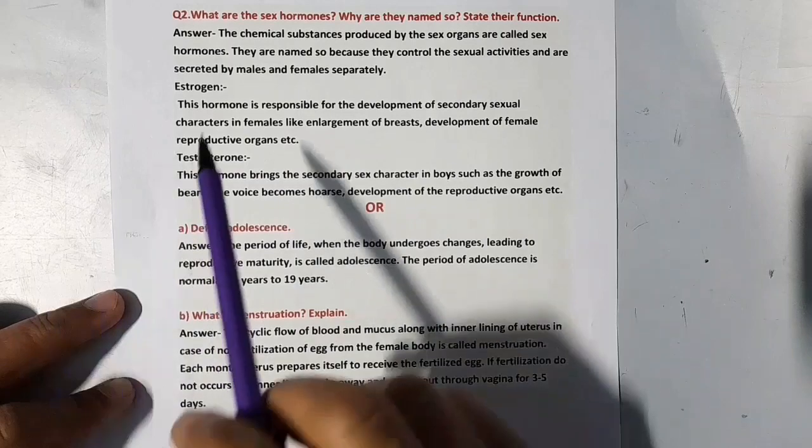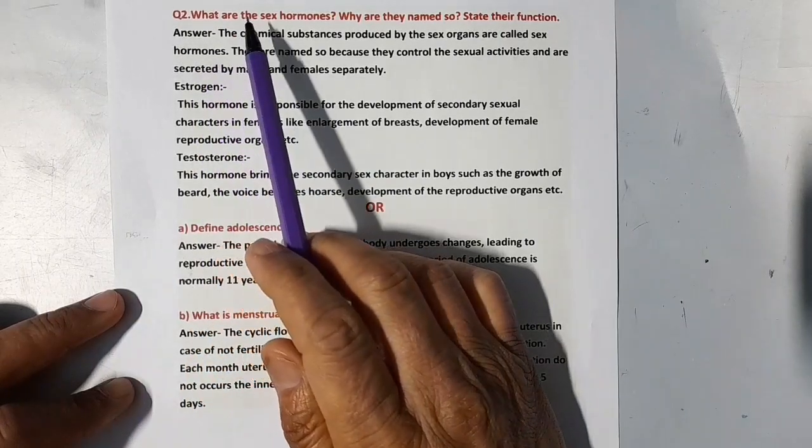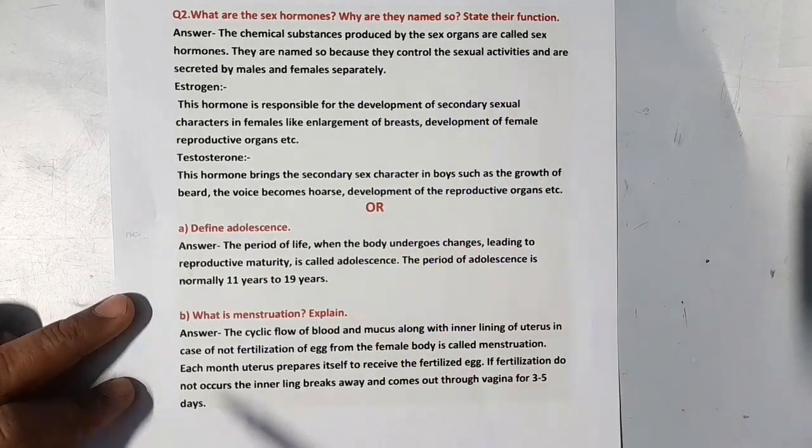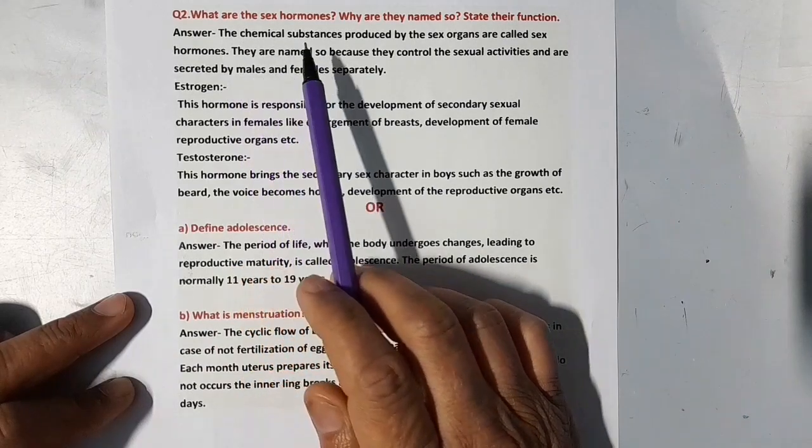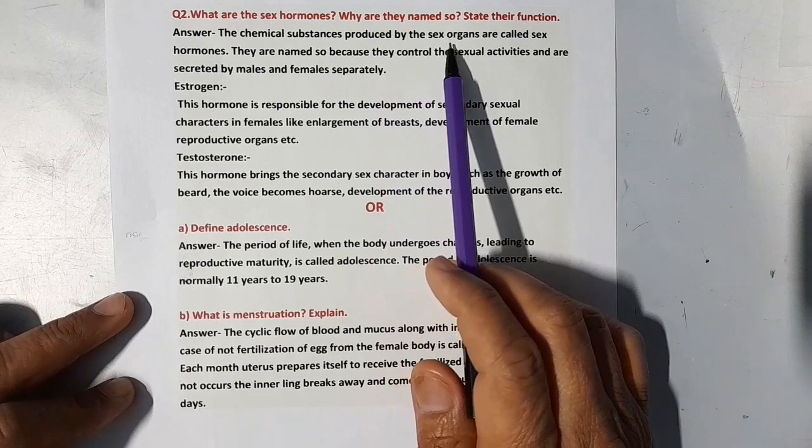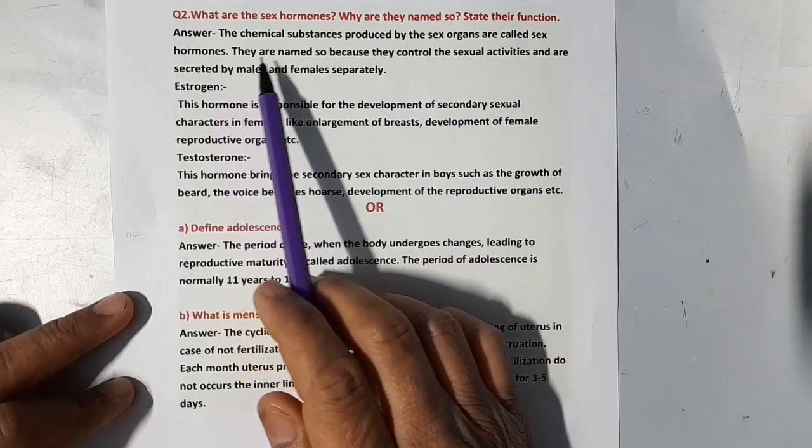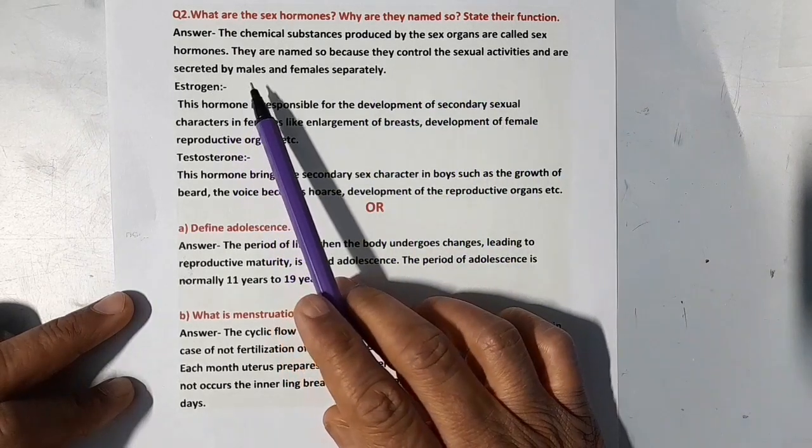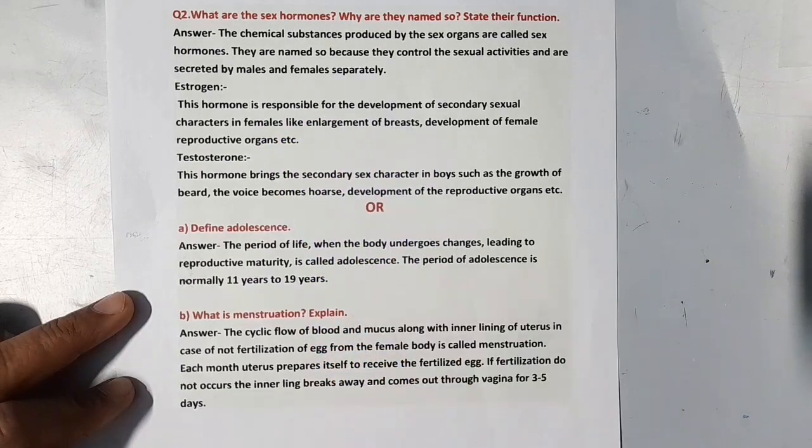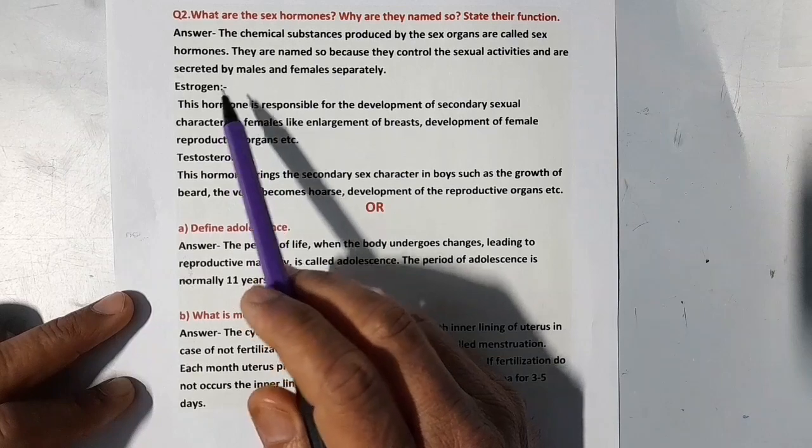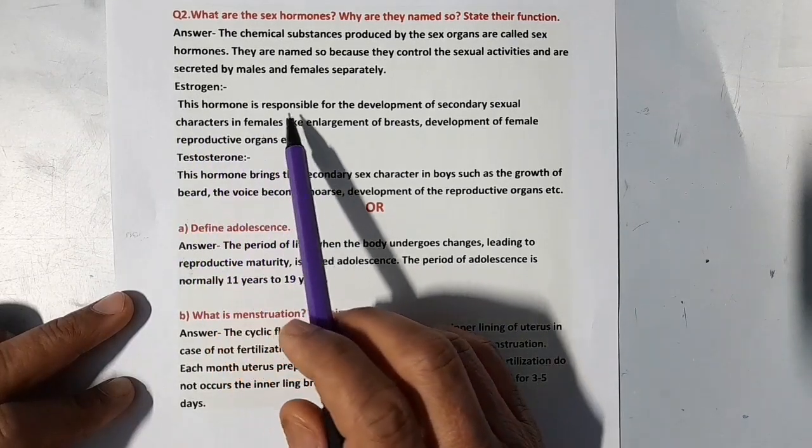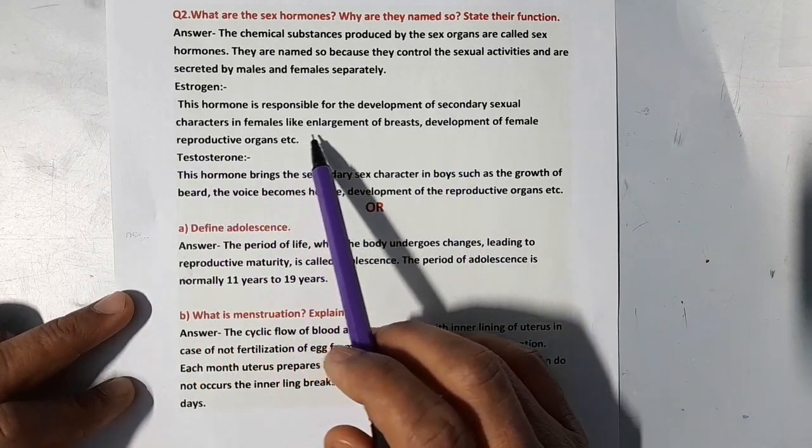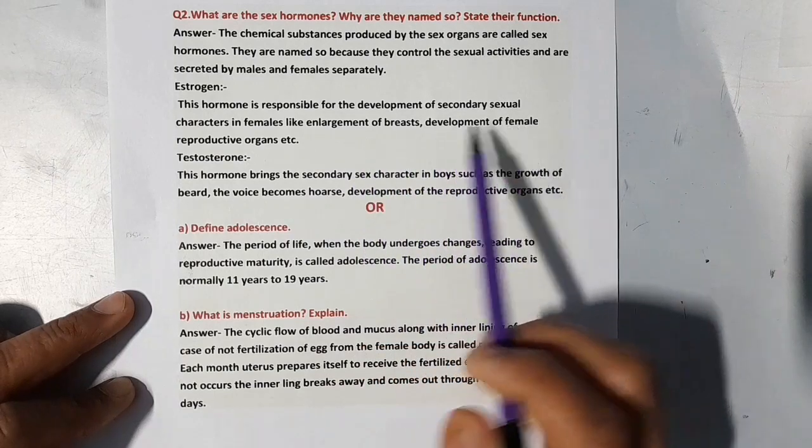Now our next question: What are the sex hormones? Why are they named so? State their function. The chemical substances produced by the sex organ are called sex hormones. They are named so because they control the sexual activities and are secreted by males and females separately. Our first sex hormone is estrogen. This hormone is responsible for the development of secondary sexual characters in females, like enlargement of breasts, development of female reproductive organs, etc.